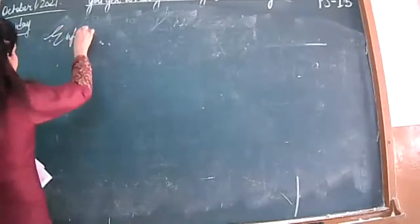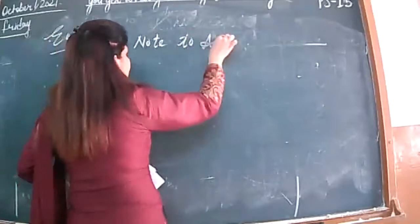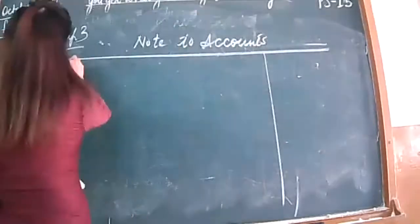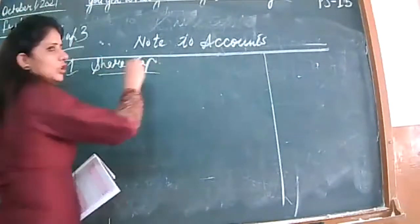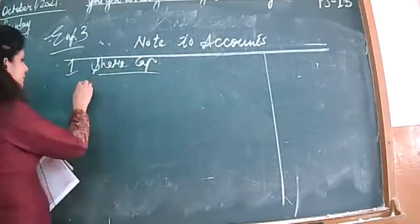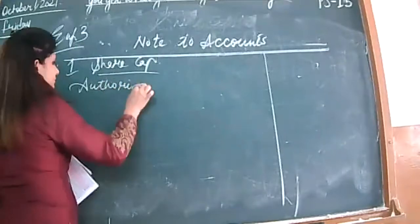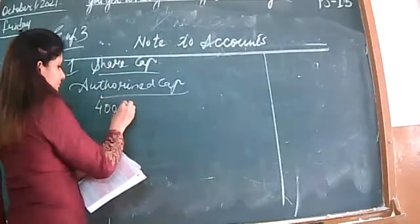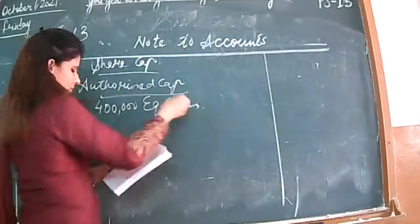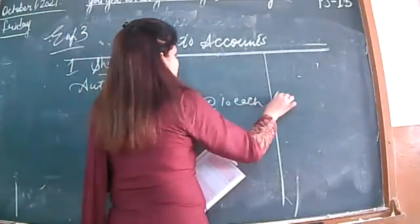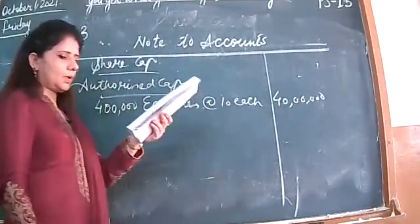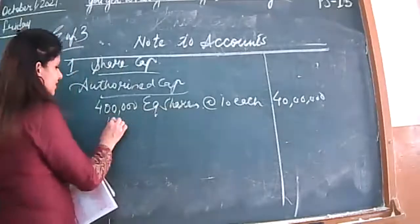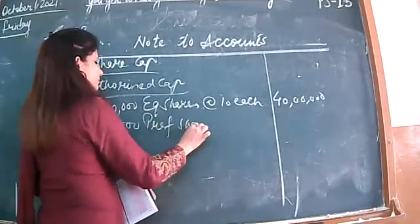Example number three. Notes to accounts, note number one — share capital. The first type of capital is authorized capital. Has he given us authorized capital? Write: 4,00,000 equity shares at the rate of 10 each — that is 40,00,000. Preference shares at the rate of 100 each — that is 50,00,000. Has he given issued capital? Yes.